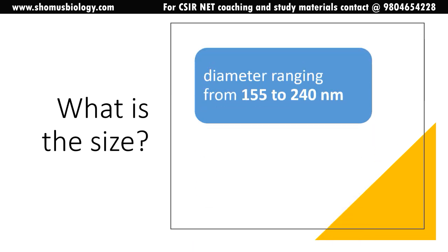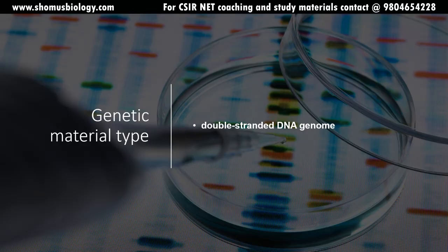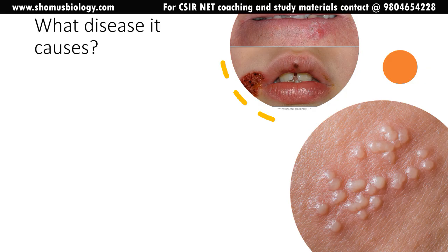Because of its four layers, the herpes virus is comparatively big — 155 to 240 nanometers in diameter. The icosahedral capsid itself has a diameter of 125 nanometers, while the overall spherical virus diameter is 155 to 240 nanometers, the difference accounted for by the tegument protein and other matrix components. Its genetic material is double-stranded DNA.